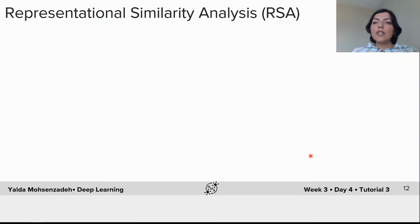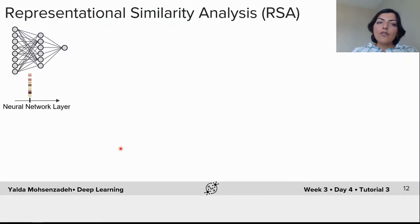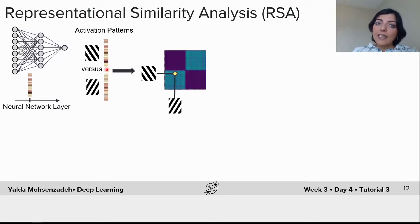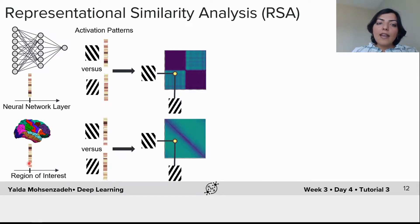With representational similarity analysis, you would first extract activation patterns from each layer of the network, then compute their dissimilarities and create an RDM. You can create an RDM for each layer of the model. In a similar way, you would extract the neural activity patterns from brain region V1, compute their pairwise dissimilarities, and create an RDM from V1.